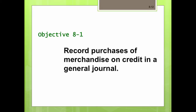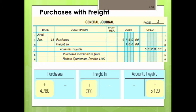Now we're going to go into recording purchases of merchandise on credit in a general journal. Max Out Sporting Goods purchased merchandise from Modern Sportsman on January 15th. Modern Sportsman paid the freight charge and included it on their invoice. The invoice totals $1,100. Max Out Sporting Goods enters the three elements in the accounting records: the price of goods, the freight charge, and the total invoice.